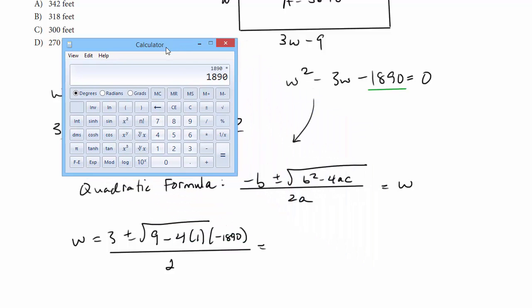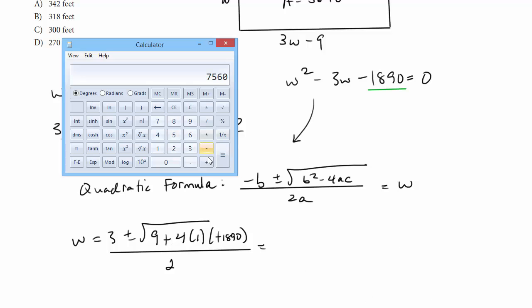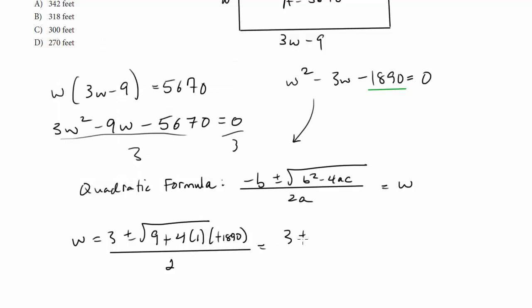So 1890 times 4 is this. Now, because this is negative 4 times negative 1890, this is all going to become positive. So we're going to go ahead and add this to 9. So 9 plus 7,560. Let's square root it and hope we get something good. Great, 87.